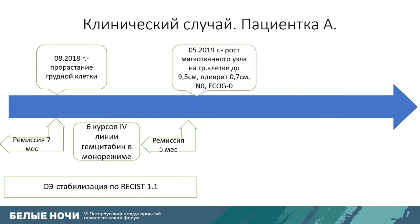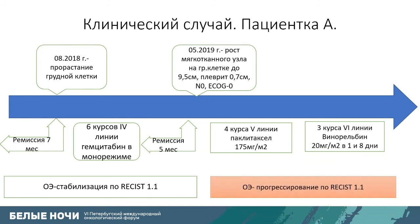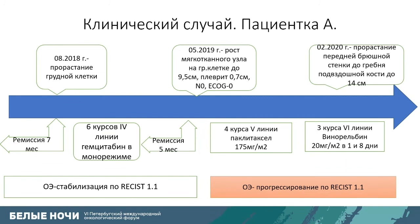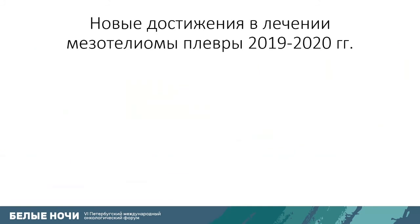In May 2019, a soft tissue node grew to 9.5 cm in the chest, with liquid again accumulating in the right pleural cavity. ECOG remained zero and no lymph nodes were involved. Unfortunately, subsequent treatment with paclitaxel and later vinorelbine was not efficient and the tumor kept growing. At control in February of this year, the tumor had infiltrated into the abdomen up to the iliac crest. The follow-up period by then was 13 years.